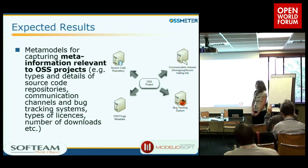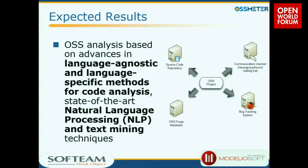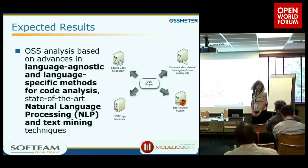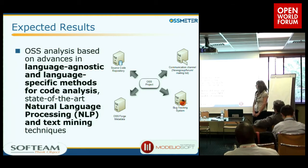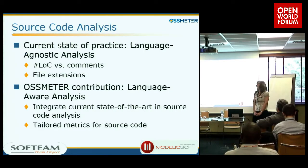We have metamodels behind our work that store all the relevant information about open source software. We work with language-agnostic and language-specific tools for code analysis, which is very important in the open source context. We also do natural language processing and text mining, enabling sentiment analysis on communication channels to see how people feel about the code.